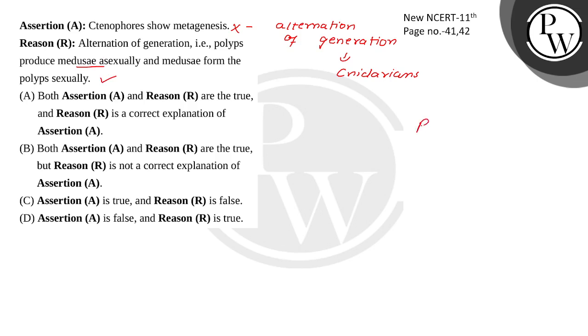Polyps - what will they produce? Medusae. And how do they produce? Asexually. Medusae produce gametes, fusion of gametes - this is sexual. Medusae produce polyps sexually.